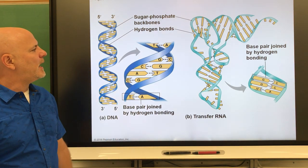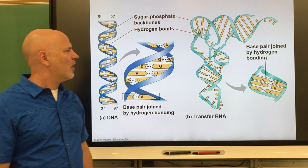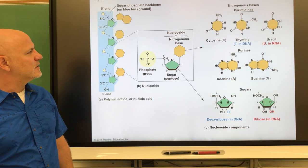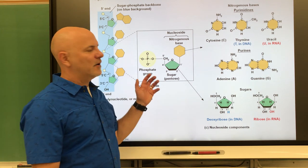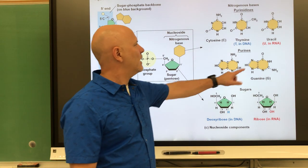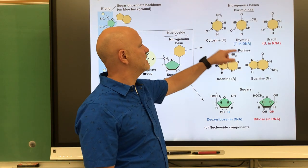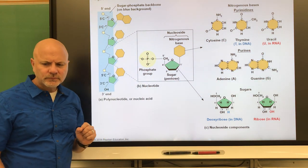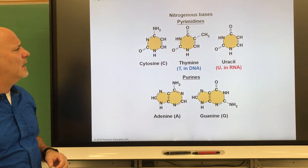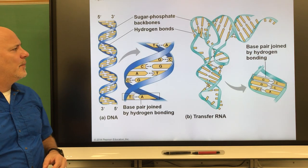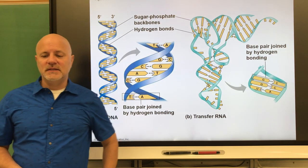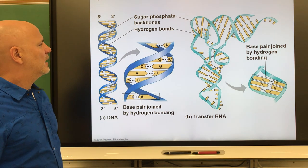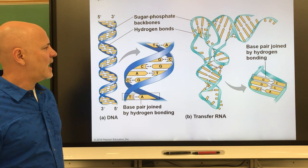RNA also has four nucleotides: adenine, guanine, cytosine, and uracil — uracil replaces thymine in RNA. Unlike DNA, RNA is single-stranded and does not form a helix.